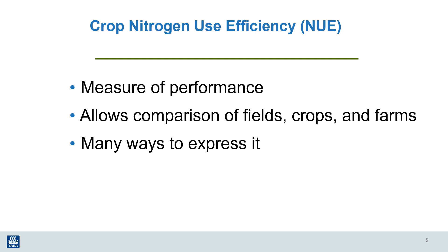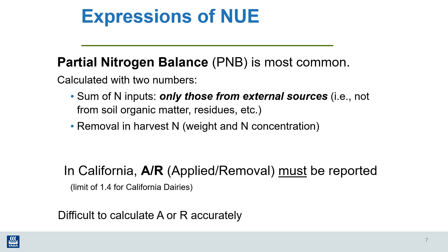Calculating nitrogen use efficiency is a good way to measure how we're performing on a farm. When we know the efficiency of our fertilizer use, we can compare that with other fields and farms to see if there are areas for improvement. However, there are many ways to calculate NUE, ranging from fairly simple to very thorough and complex. Perhaps the most common and easiest way is to consider all the nitrogen added to the field and compare that with the amount of nitrogen removed during harvest. This approach is called a partial nitrogen balance — called partial because it doesn't include all possible inputs, but only those that are most common.